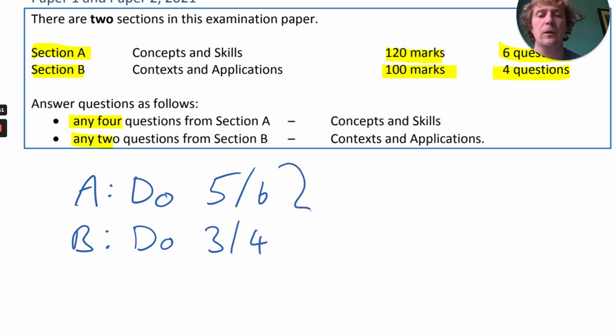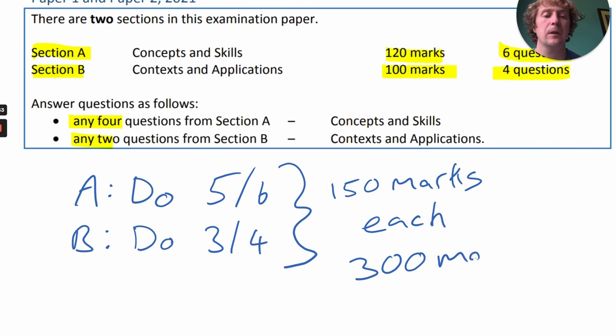The good thing about this is if you do one extra in each section, that's 150 marks in each section for 300 marks in total. This makes it the same as a normal Leaving Cert paper, except you still have a choice because you're still allowed to leave out one question.